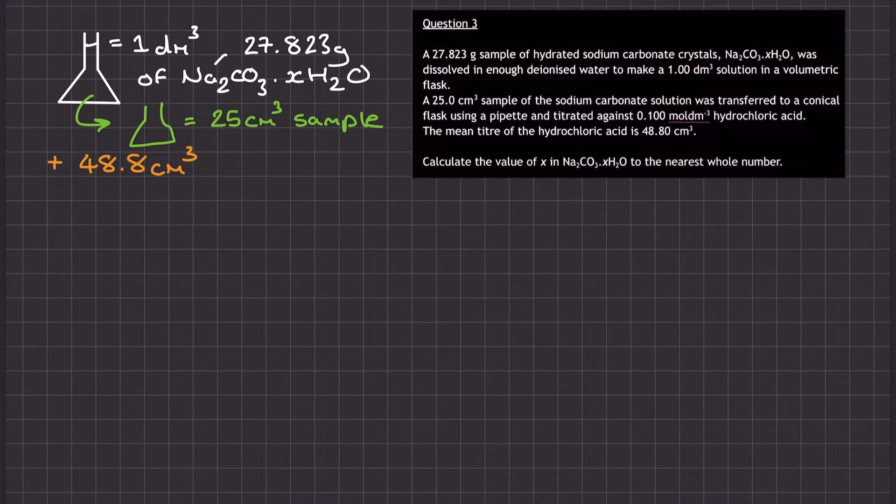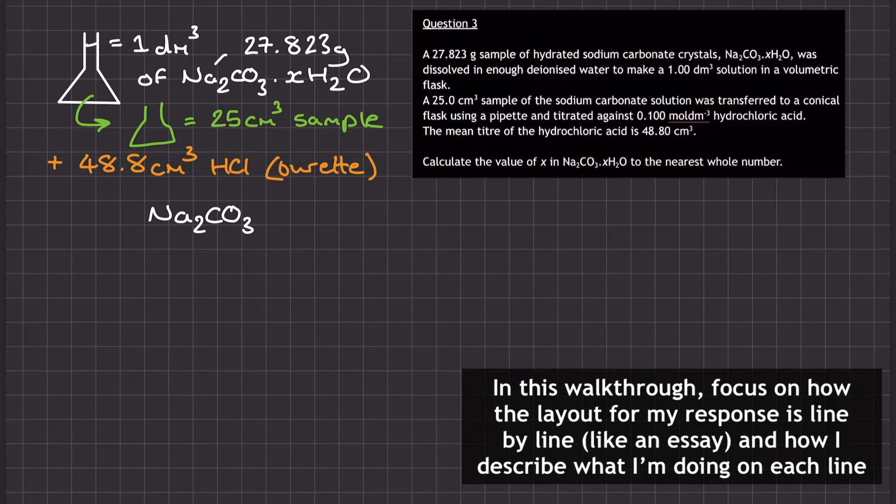25 centimetres cubed of this big solution is then used in a titration against 0.1 mole per decimetre cubed HCl, giving a mean titre of 48.8 centimetres cubed. The goal is to determine the number of waters of crystallization in the original formula, most likely using molar mass.